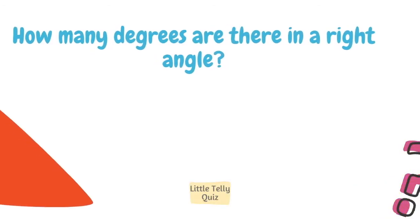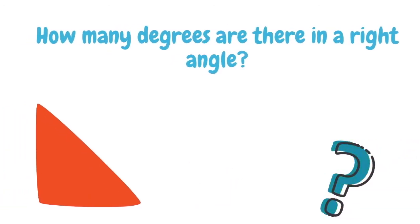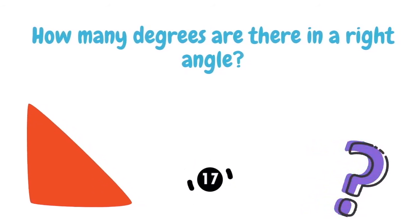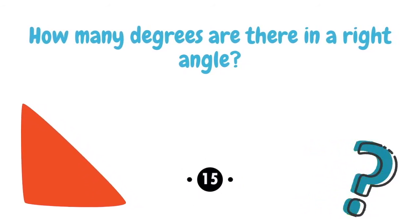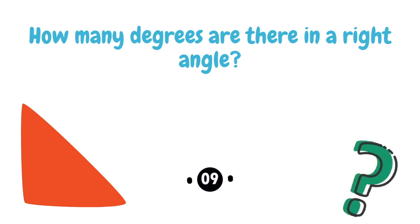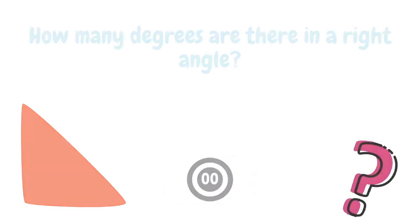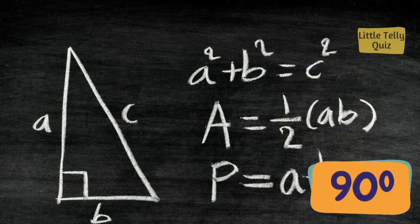How many degrees are there in a right angle? The answer is 90 degrees.